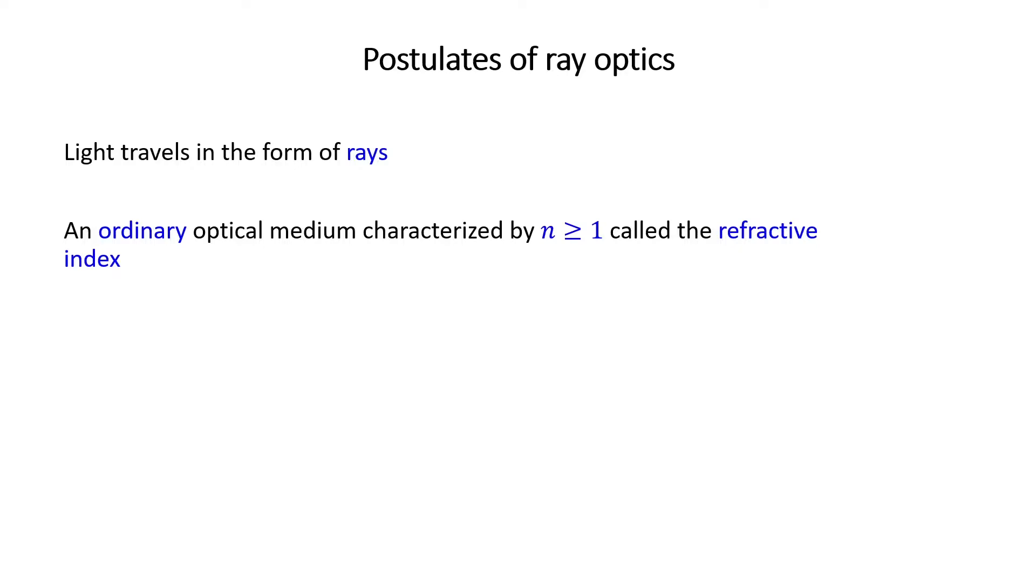I highlighted the word ordinary because today we have some unusual materials which have refractive indices less than 1, and in particular, negative refractive index. By definition, the refractive index is the ratio of C0 over C, which C0 is the speed of light in vacuum, and C is the speed of light in the medium.